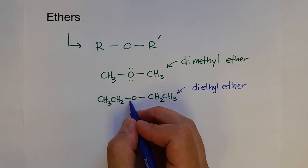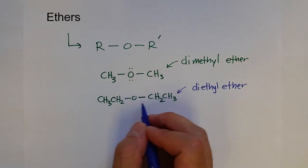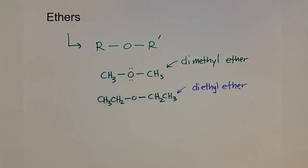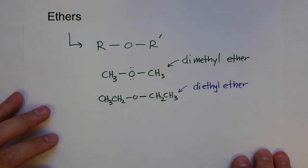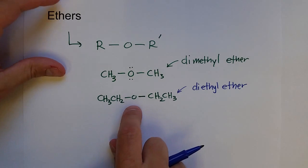Anytime you have an oxygen single bonded to two carbons in the middle of a hydrocarbon, that is known as an ether. When you have an oxygen directly bonded to a carbonyl instead, that is actually called an ester.